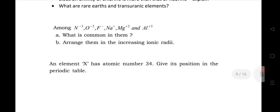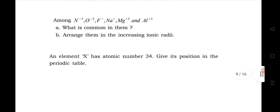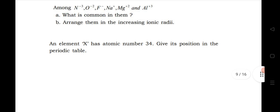Next two questions are very important among N, O, F, Na, Mg and Al which is common in them arrange them in increasing ionic radii. Next and the last question of this chapter, Enderman has atomic number 34 give its position in the periodic table.